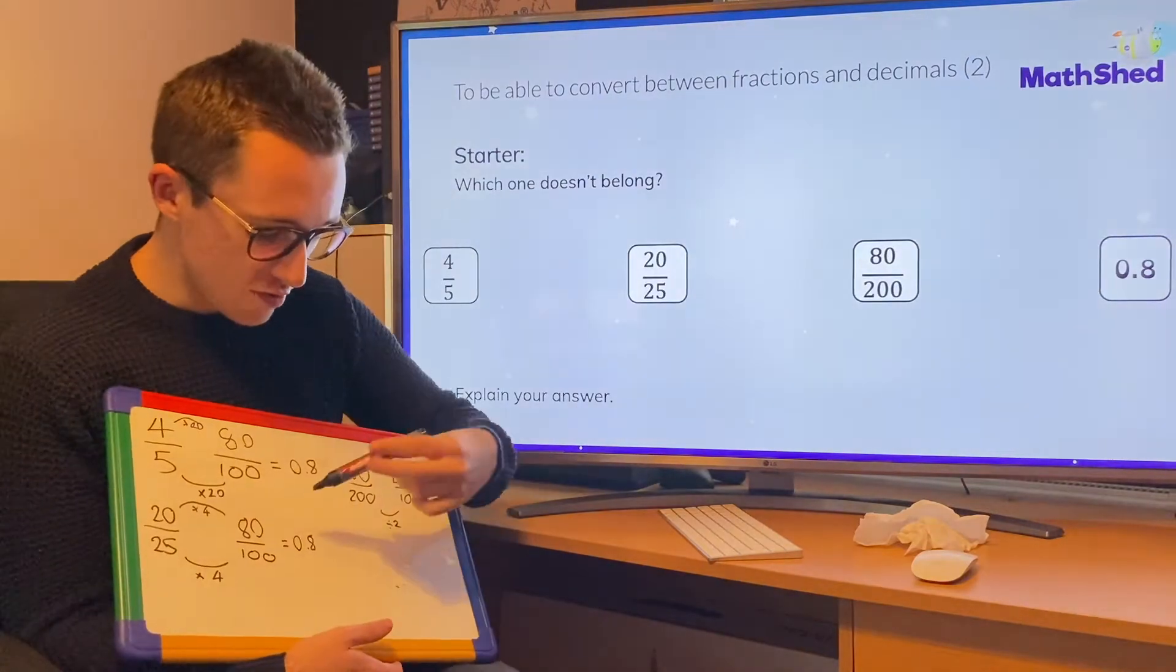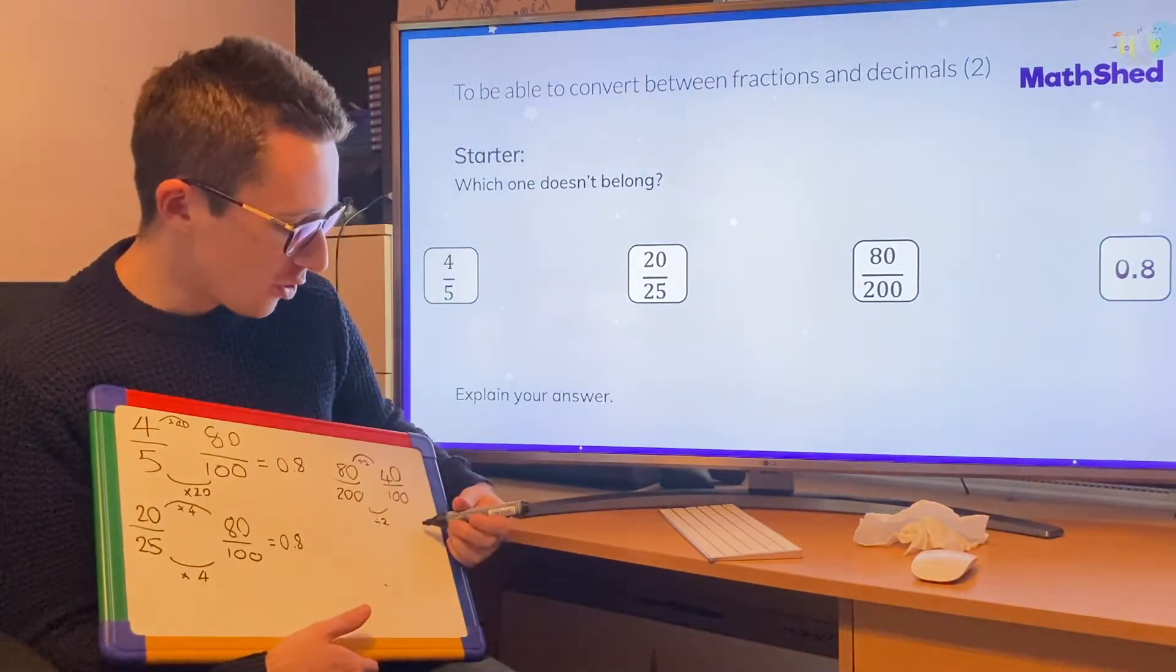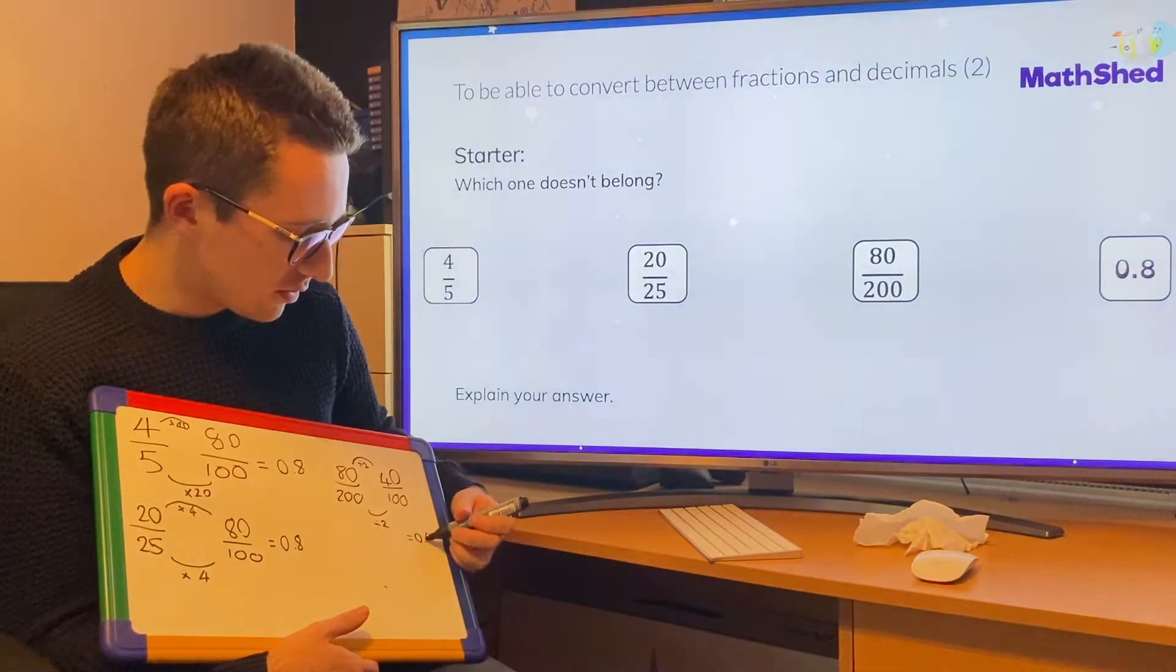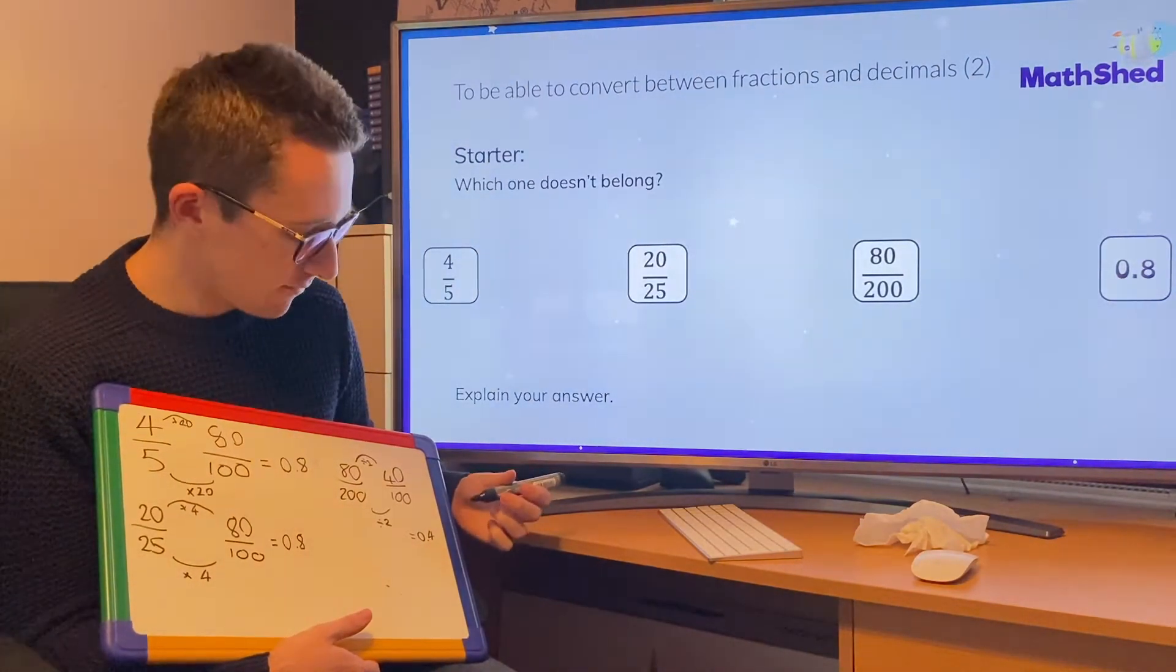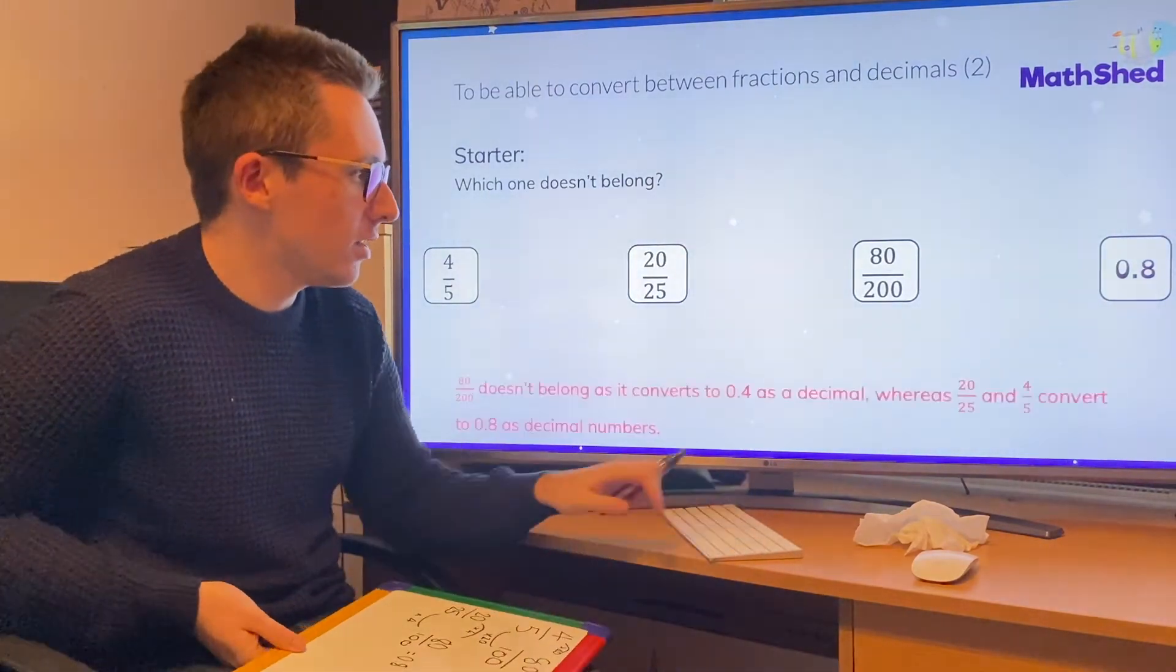Now 40 over 100 is not 0.8, because that would be 80 over 100. So 40 over 100 must be 0.4. Therefore, this one is the odd one out. Okay, let's move on.